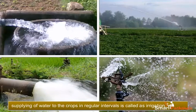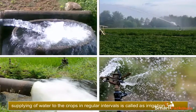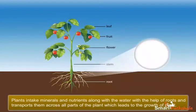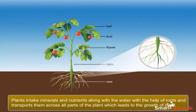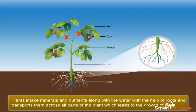First, we need to understand the importance of water before learning more about irrigation. Water is necessary for all living organisms for their survival, growth, and development. Water is also essential for the germination of seeds.